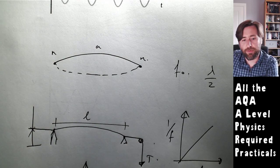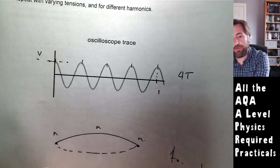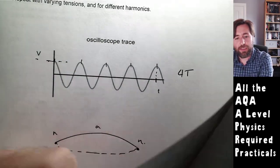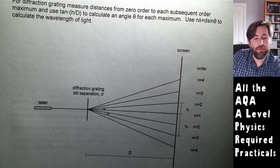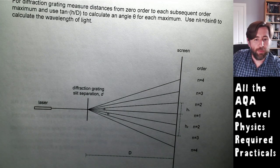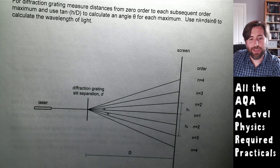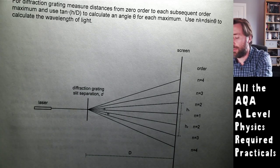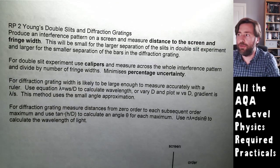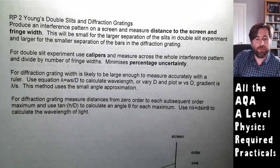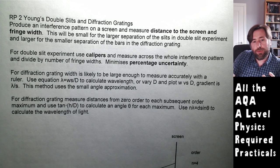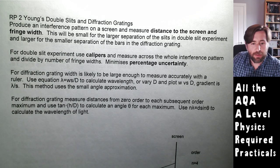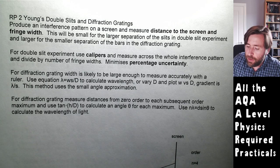For the oscilloscope, either having the time base as small as possible to show just one full wave, or measuring many waves and dividing by how many there are, is perfectly acceptable. Both approaches give a small percentage uncertainty - it's not set in stone either way.